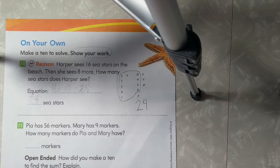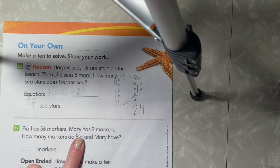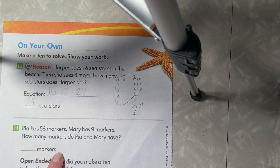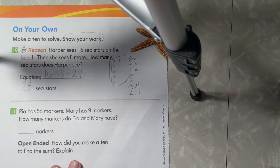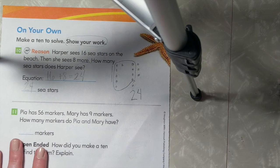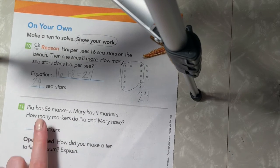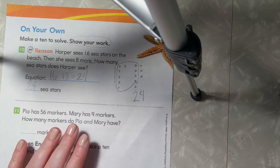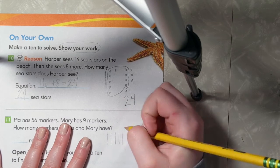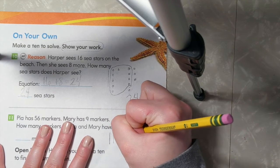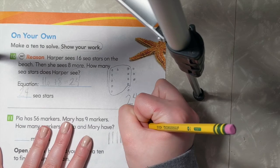Number 11. Pia has 56 markers. Mary has 9 markers. How many markers do Pia and Mary have? So what we are looking for is how many markers does Pia and Mary have all together? Let's start with Pia's 56: 1, 2, 3, 4, 5, and 1, 2, 3, 4, 5, 6.